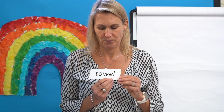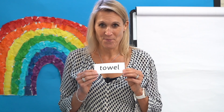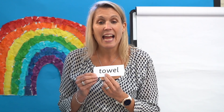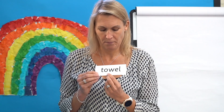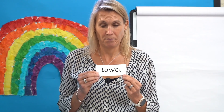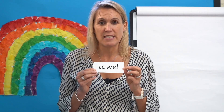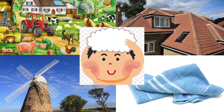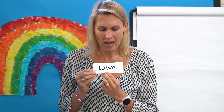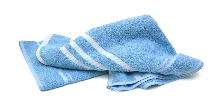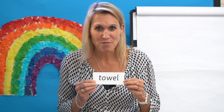Now let's read some words with graphemes that we already know and play a little game. Each time I want you to say the sounds as I point and then blend to read the word. Have a look at this word. Can you spot the digraph? Yes, the digraph is OW. Let's check: T-OW-ER-L. Towel. Here is the picture of the towel. Did you get it right? Well done.